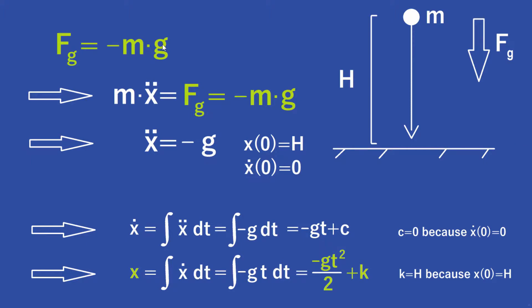From Newton's second law we get that m times the second derivative of x equals the gravitational force, which equals minus m times g. So our differential equation, or equation of motion, is that the second derivative of x equals minus the gravitational constant. To solve this we also need two starting conditions: the position at time zero, which is h since the particle starts at height h, and the velocity at time zero, which is zero since the particle is not in motion at the start.